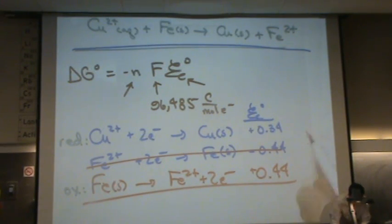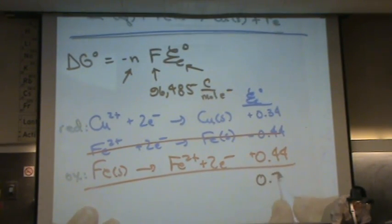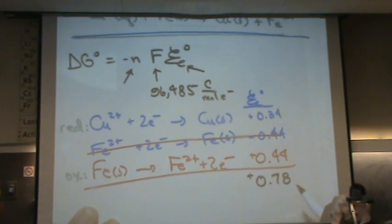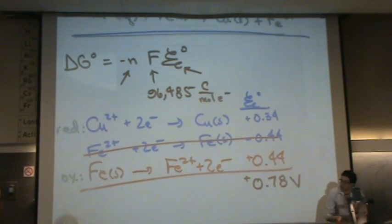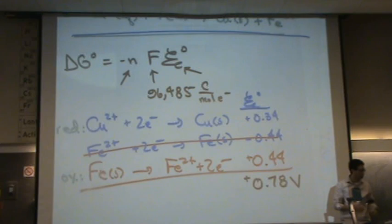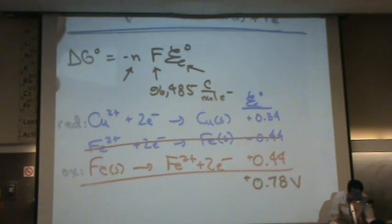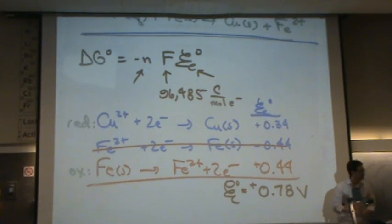Now let's add those numbers, 0.34 and 0.44. That's 0.78 positive, and that's volts. All these units are volts. Now I know my E standard, it's right there. What is n in this reaction?